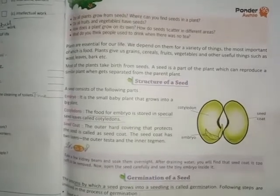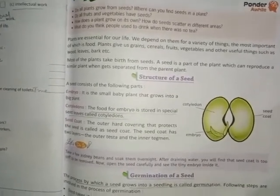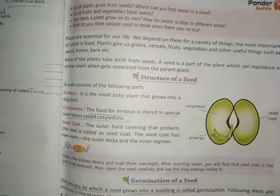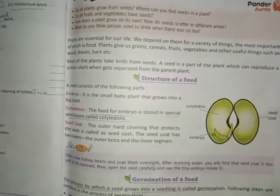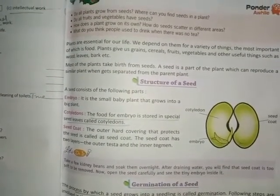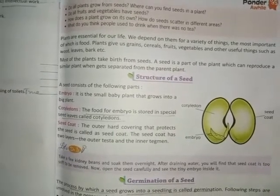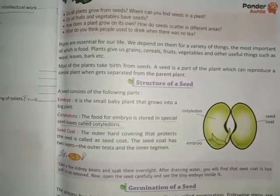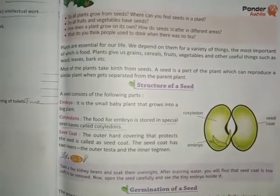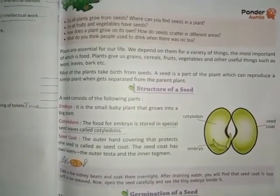It is a reproductive structure which disperses and can survive for some time. Seeds carry the food that helps the new plant begin to grow. This food is stored in the endosperm or in the cotyledon.